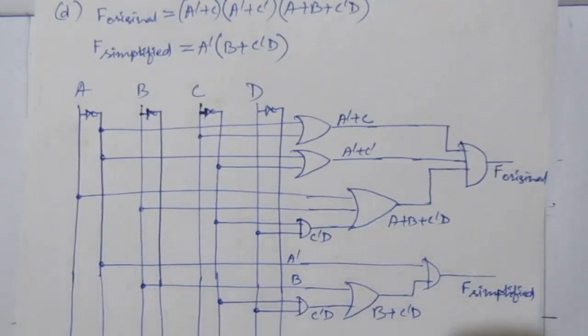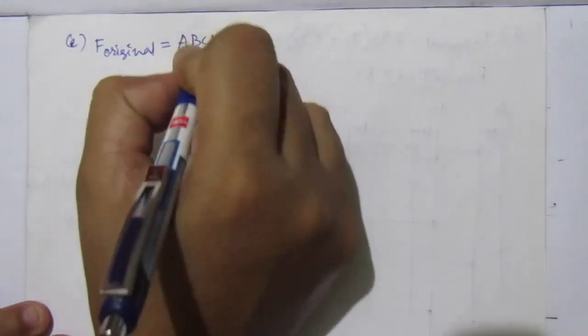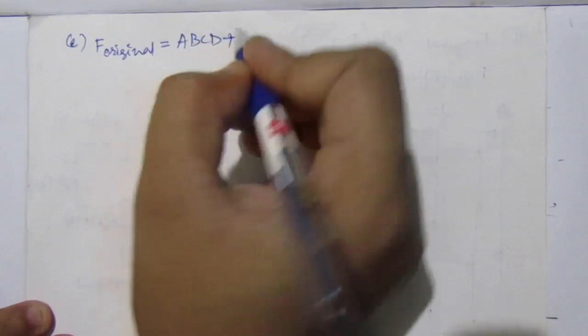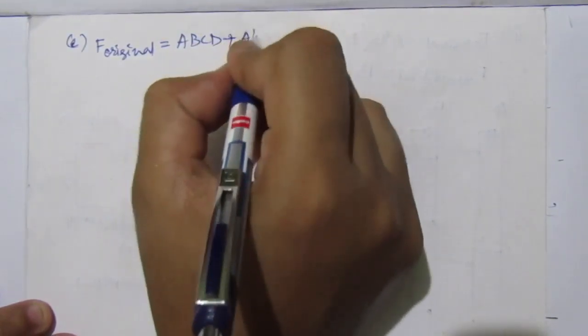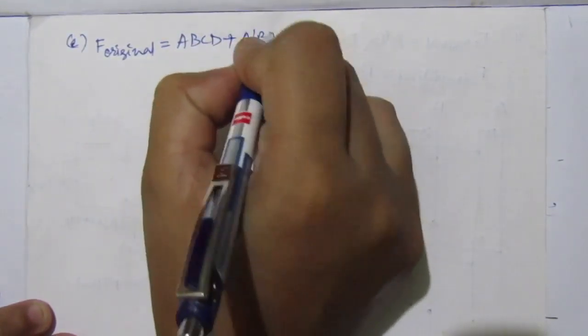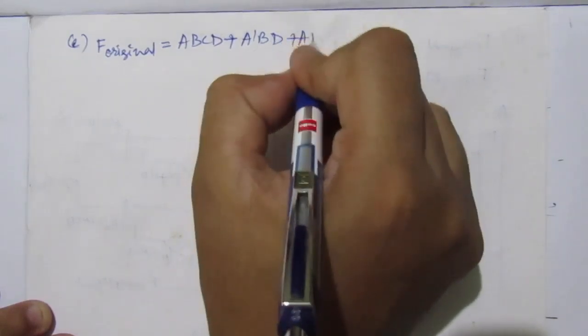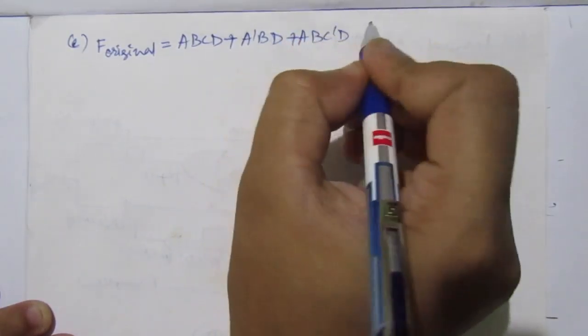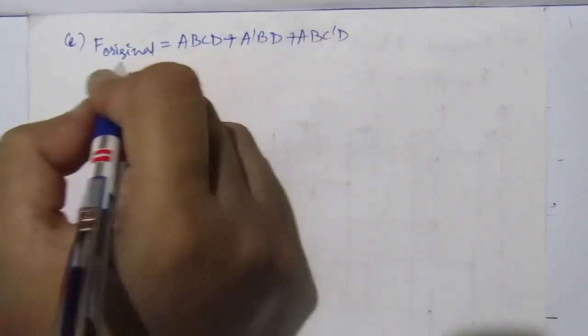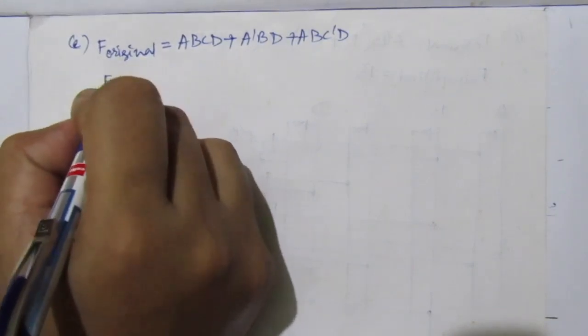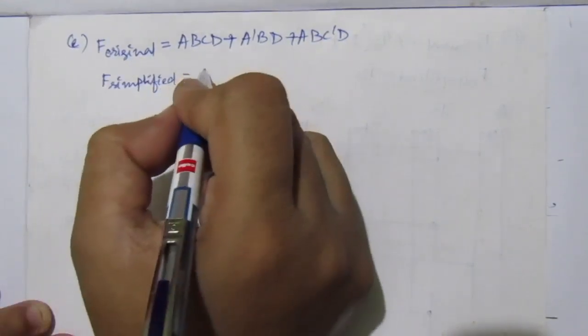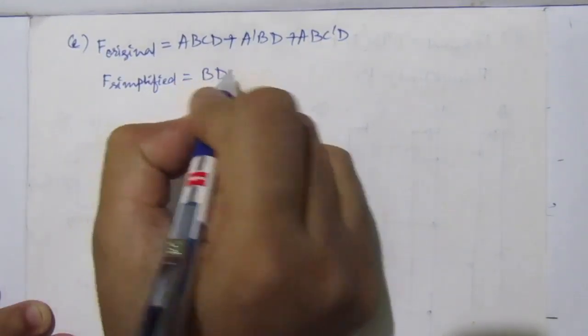For part e, f original equals a·b·c·d plus ā·b·d plus a·b·c̄·d. And f simplified equals b·d.